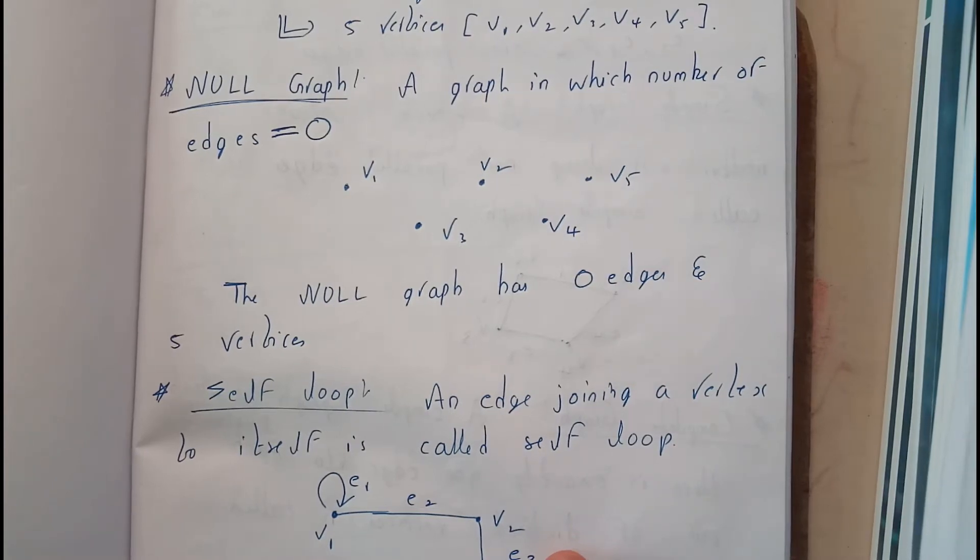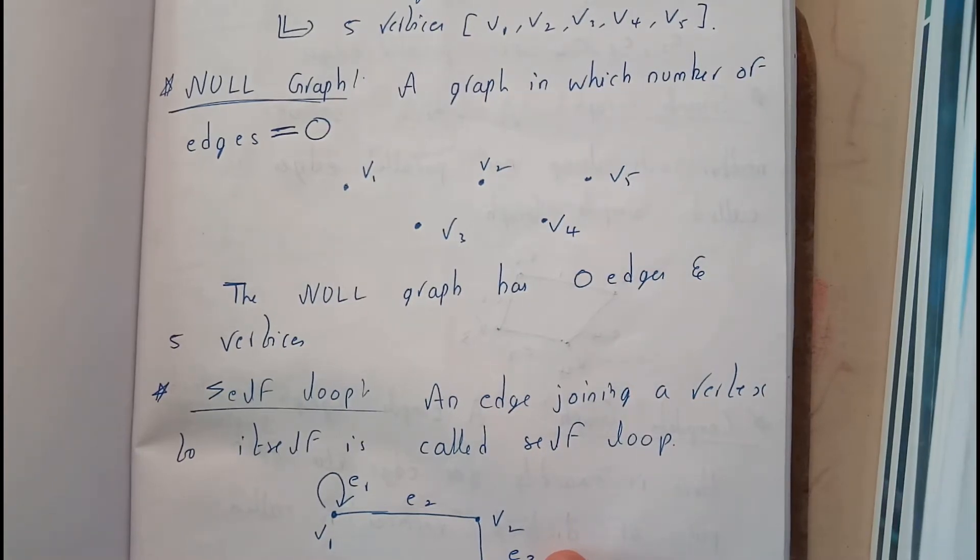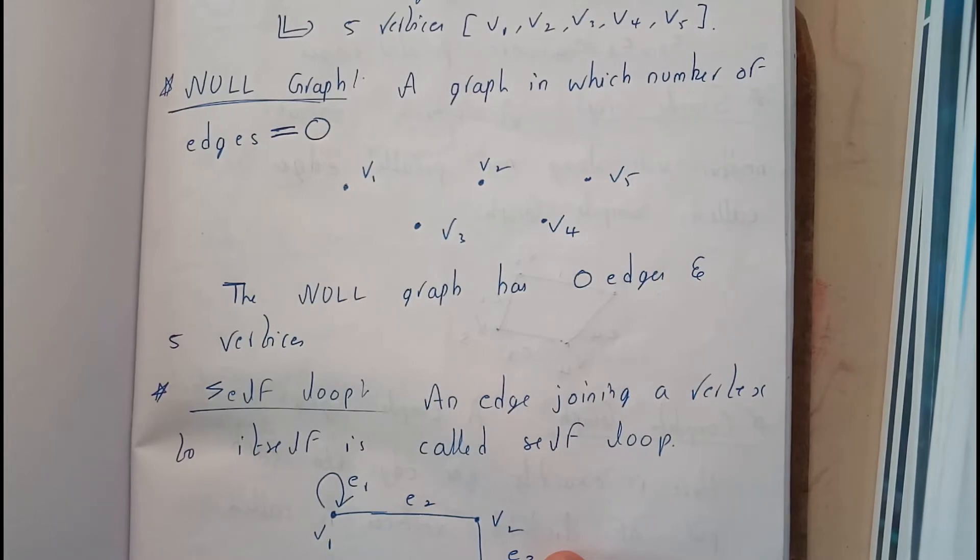Hello guys, in this tutorial let's see what is a Null Graph. A Null Graph is a graph in which the number of edges equal to 0.